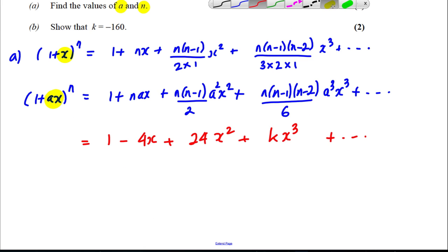Clearly from this, you can see that N A must be equal to negative 4. You must be able to see that there, to have the same number of Xs. So N A must be equal to negative 4. OK, what else can we say? Well, we could say this here.